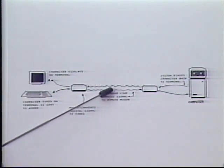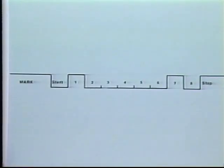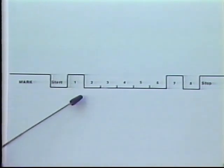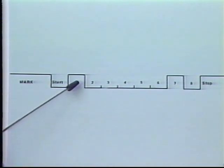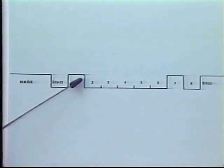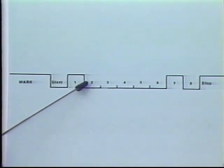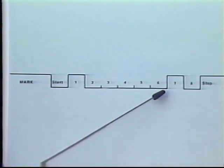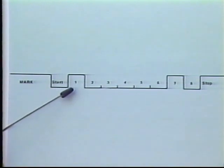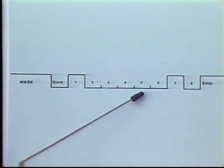The modem takes the digital output, converts it into telephone line type signals, and at the opposite end another modem converts it back into digital format. If we were to capture one character coming out of the terminal, this is what it would look like — a series of positive and negative voltages moving across in time. Dependent on which portion of the character is positive and negative, this determines the data bits that make up the character. We're using the ASCII code, or American Standard Code for Information Interchange, and this would represent the character A as seen on the line. What we're seeing is a series of voltages, or ons and offs — like in the old telegraph, marks and spaces moving across the line.